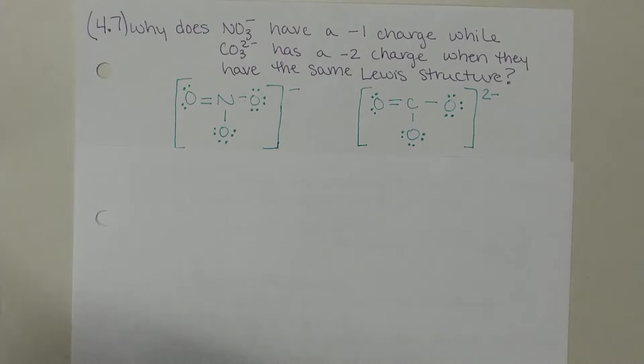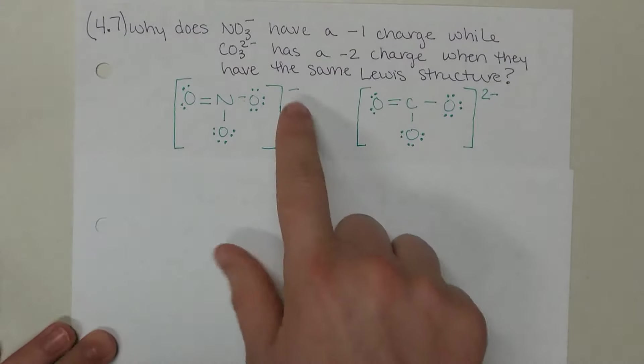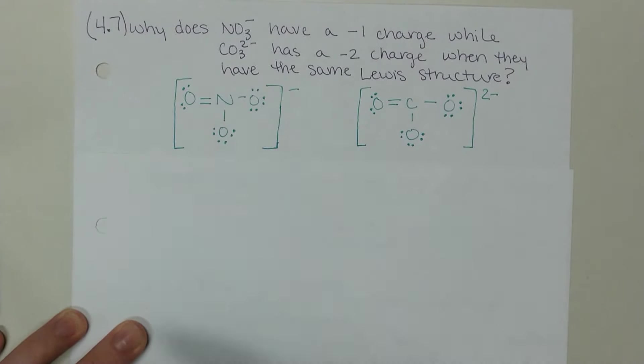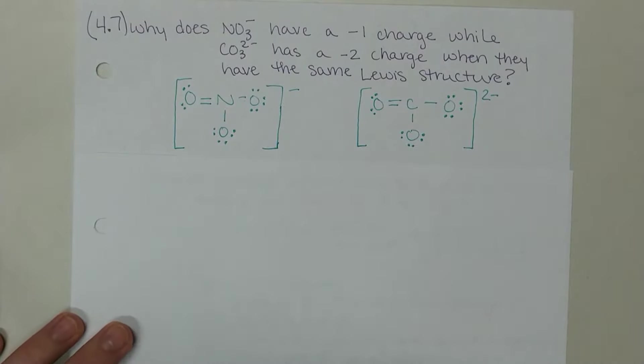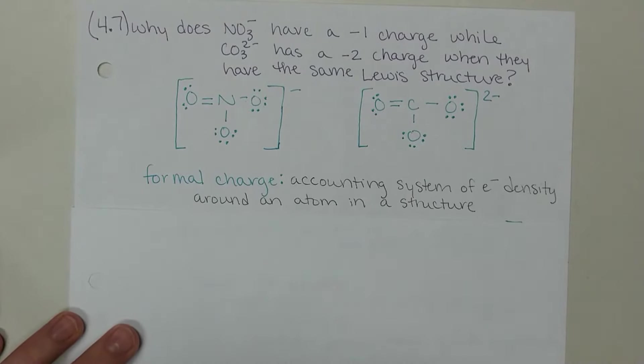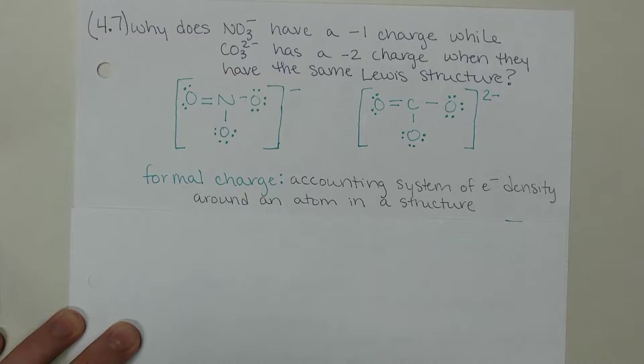Formal charge is a way that we can assign or figure out where exactly this overall charge happens on the molecule - in other words, which atom is contributing or accounting for that charge. Formal charge is an accounting system of electron density around an atom in a structure. It takes into consideration how many electrons that atom is contributing to the Lewis structure, how many electrons it is sharing, and how many electrons it has as lone pairs.